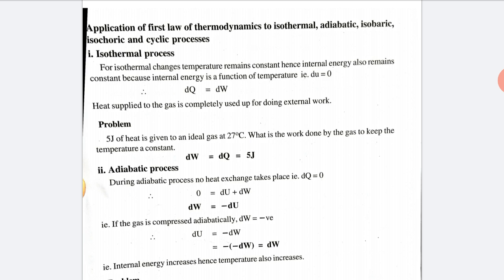First application: the isothermal process. In the isothermal process, temperature is constant. Since internal energy is a function of temperature, if temperature is constant then dU equals zero. Applying the first law, dQ equals dW — the heat supplied is completely converted to work.